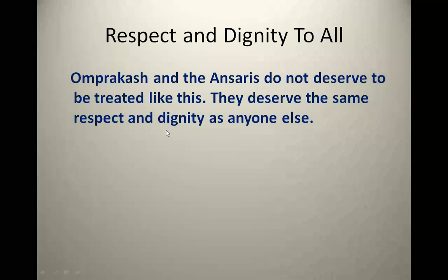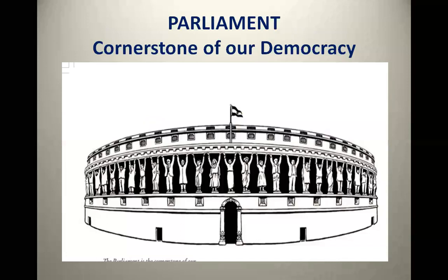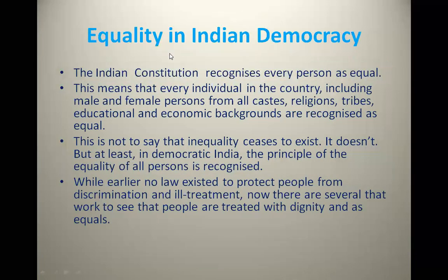So here we discussed two types of inequalities prevailing in India: first, the caste system, and second, religious discrimination. What is the solution to remove this inequality? First is the Parliament — the cornerstone of our democracy. Our representatives in Parliament are from each section of society. The Indian constitution recognizes every person as equal.